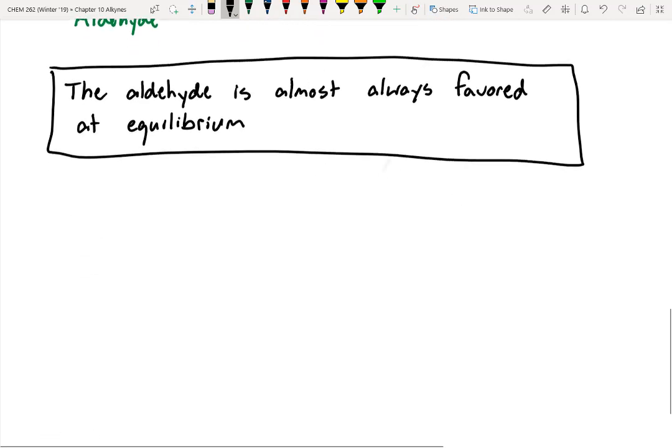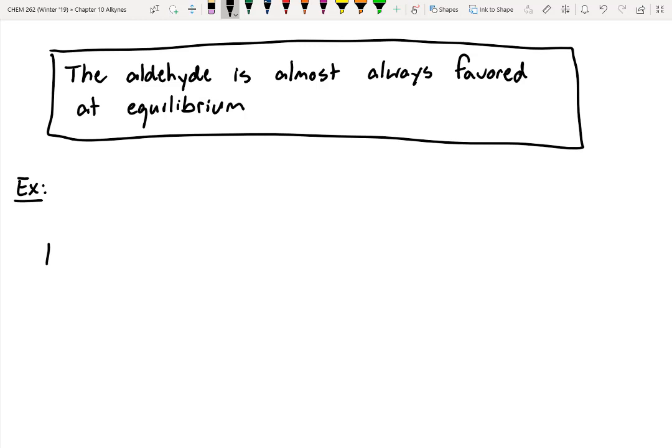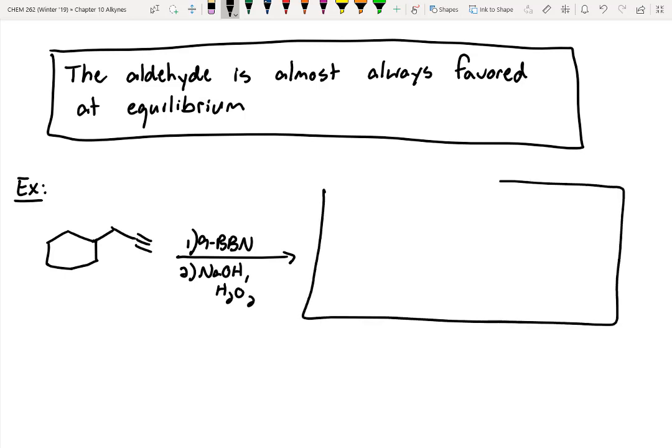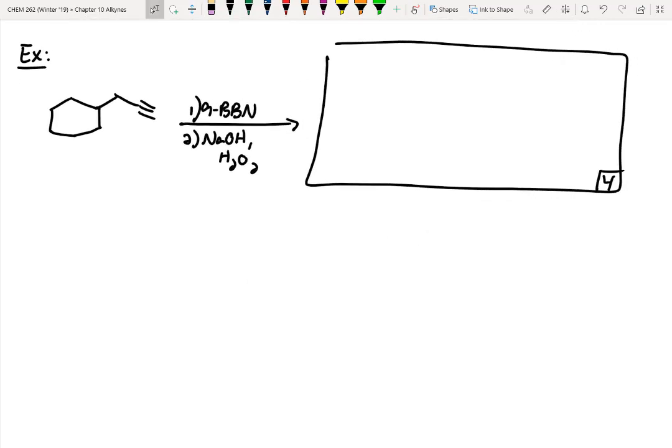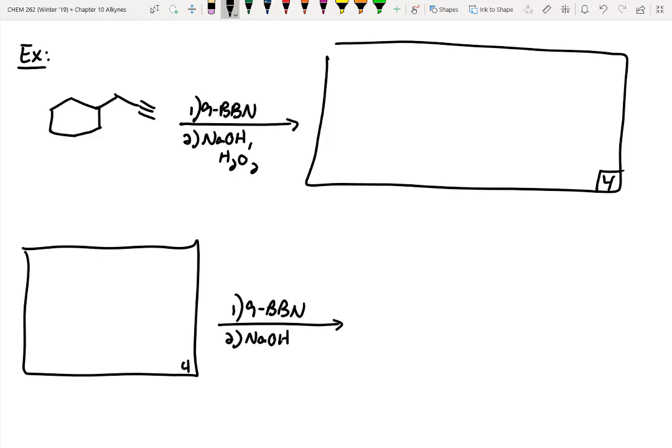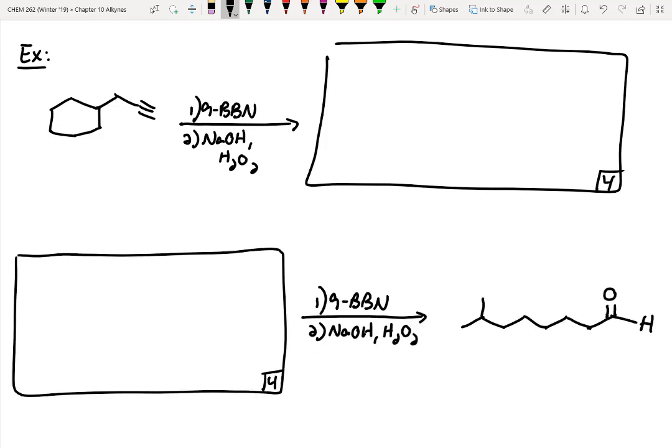Does that make sense? All right, so let's do a few practice ones. All right, the first one looks kind of similar to your pod. We're going to use 9BBN in step one, followed by sodium hydroxide and hydrogen peroxide. And I'll make this one worth four points. And then I'll do a second one below where we try to predict our starting material.